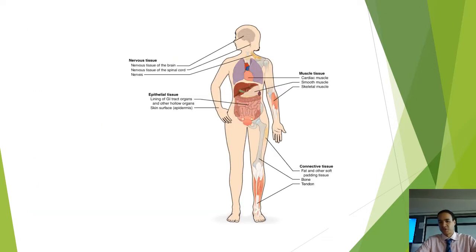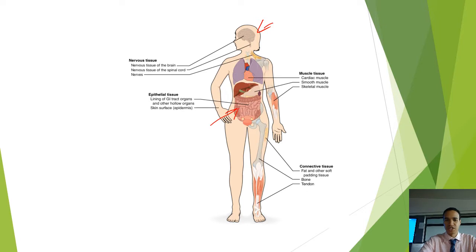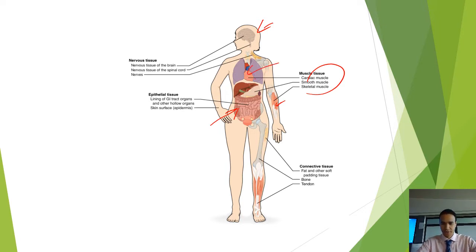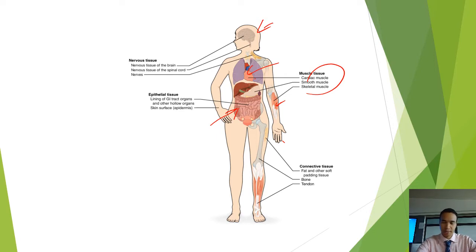Here's a quick picture showing where you might find these types of tissues. Nervous tissue is found in the brain, the spinal cord, and the nerves spread throughout the body. Epithelial tissue includes the skin and the lining of our digestive system — our gastrointestinal tract. Muscle tissue includes skeletal muscle, cardiac muscle only in the heart, and smooth muscle around our organs. Connective tissue includes fat, padding, tendons, bone, cartilage, and all those extra structural tissues.